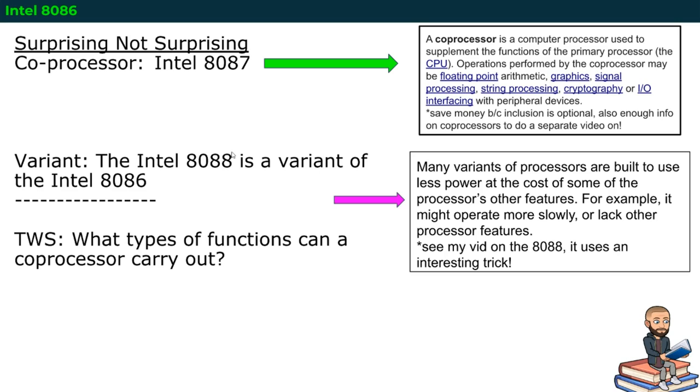To help get our bearings straight, there's these terms called coprocessor and variant. The way this works is you could have something like the Intel 8087. This thing is considered a coprocessor to the 8086. What's a coprocessor? This is a computer processor used to supplement the functions of the primary processor, in this case, the 8086. It does operations like floating point arithmetic or graphics or signal processing or string processing, even cryptography, maybe some input-output interfacing stuff.